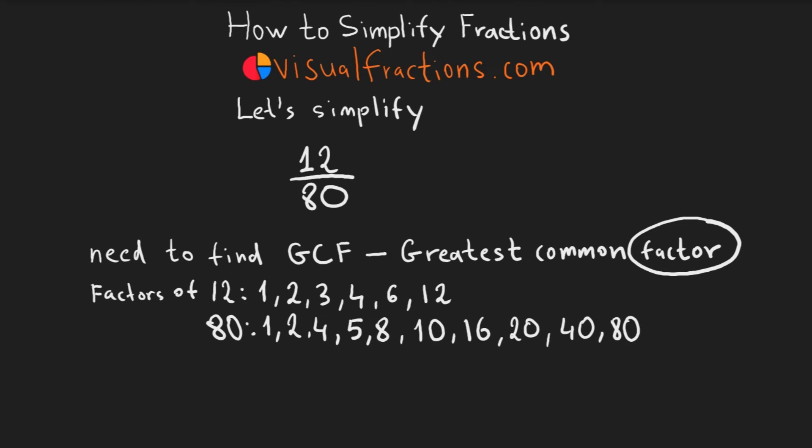The next step is to look at both sets of factors and identify any common ones, that is, numbers that are factors of both 12 and 80. In our case, the common factors are 1, 2, and 4.